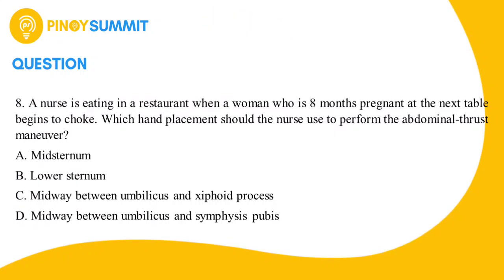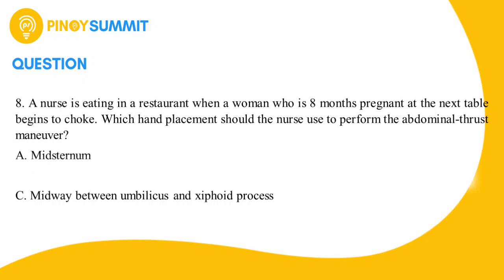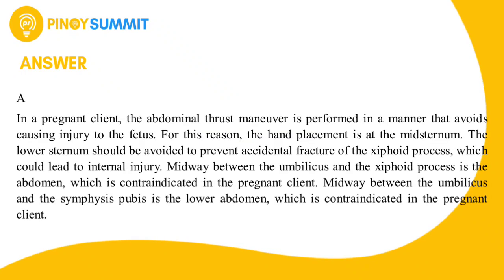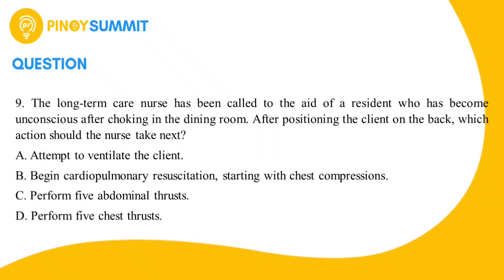To make it easier to find the correct answer, let us remove the two incorrect options, leaving only options A and C. If your answer is letter A, then you are correct. In a pregnant client, the abdominal thrust maneuver is performed to avoid injury to the fetus, so hand placement is at the mid sternum. The lower sternum should be avoided to prevent accidental fracture of the xiphoid process. The abdomen midway between umbilicus and xiphoid process is contraindicated, as is the area midway between umbilicus and symphysis pubis.